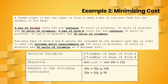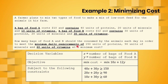A bag of food A contains 10 units of vitamins while a bag of food B contains 30 units of vitamins. The minimum daily requirement for vitamins is 60 units. With x bags of food A and y bags of food B, the total vitamins is 10x + 30y. This total must meet the minimum daily requirement, so 10x + 30y ≥ 60. This completes the resource constraints.